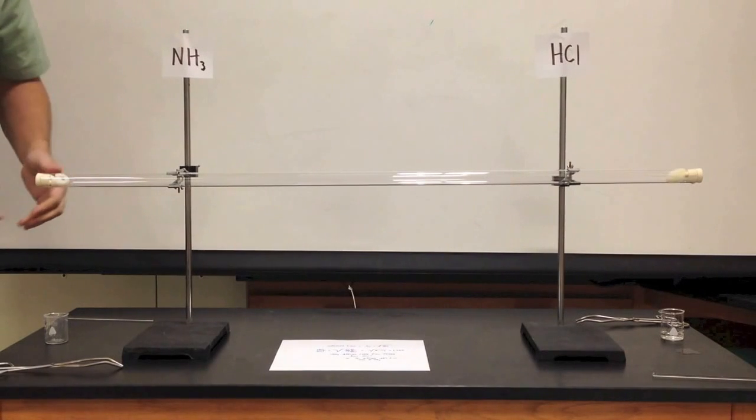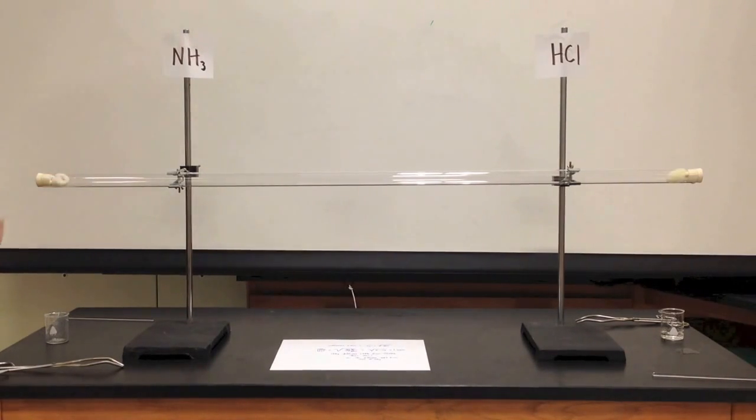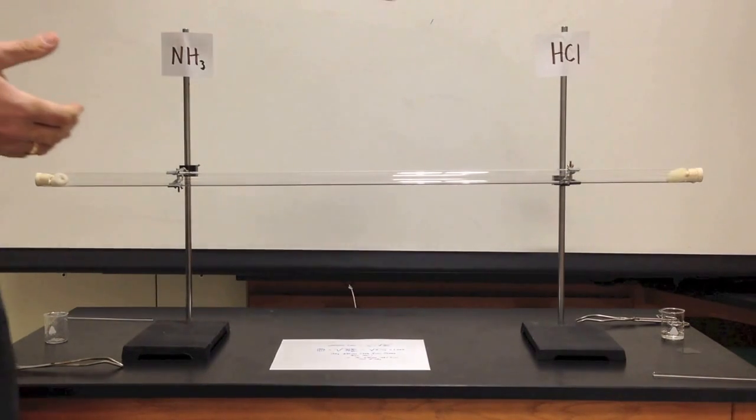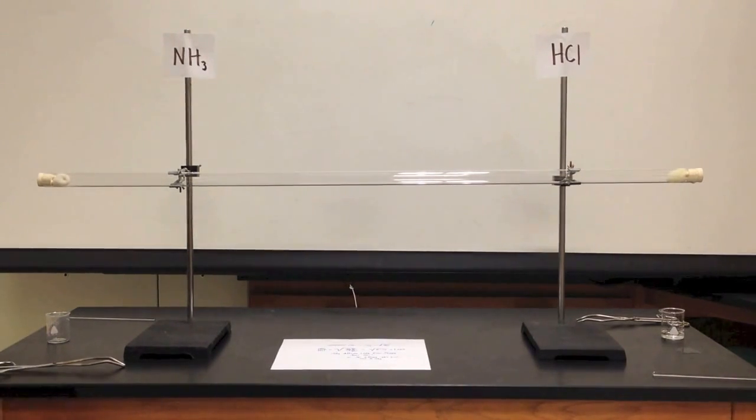Now, where these gases meet should give me an idea about the relative rates of diffusion. Ammonia being approximately 17 grams per mole, and hydrochloric acid being approximately 36 grams per mole, should tell me the ammonia is lighter.